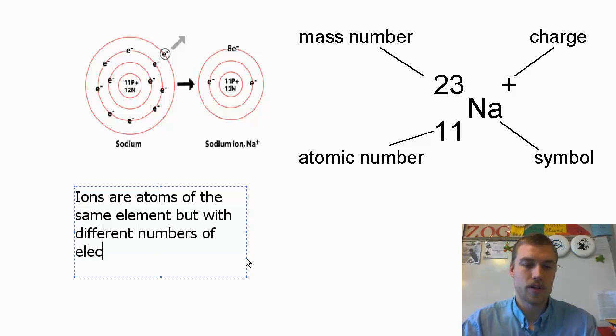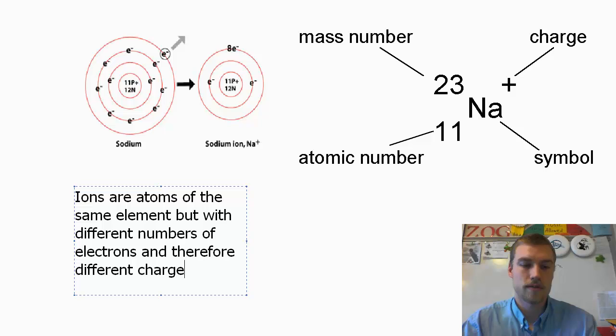of electrons and therefore different charges. Ions are going to be the same element, but they have different numbers of electrons.